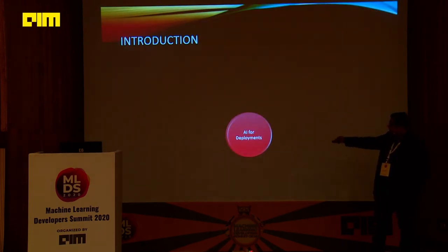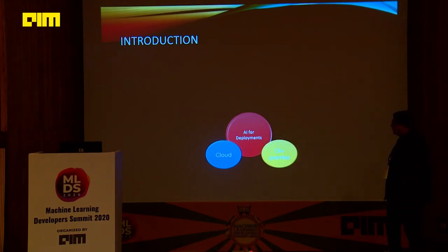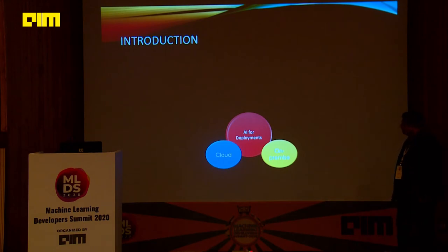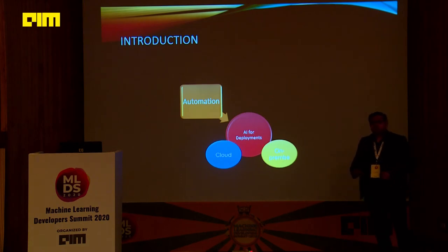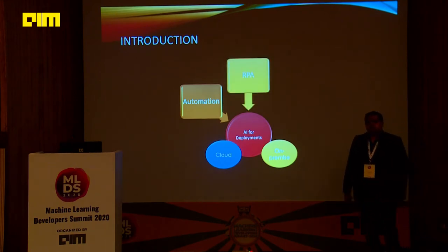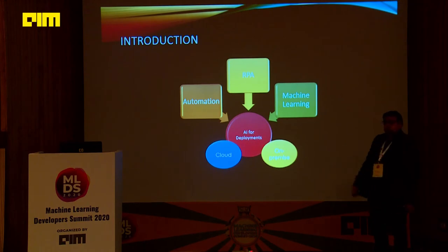For AI-driven deployments — be it a cloud deployment where everything is on cloud, SaaS-based services, or anything sitting in a private cloud, or a deployment where everything is within the enterprise or customer environment — how AI is solving these things is automation, which is the very core of any solution. This includes RPA, robotic process automation. Combining automation, RPA, and the power of machine learning, we can achieve AI for enterprise deployments.